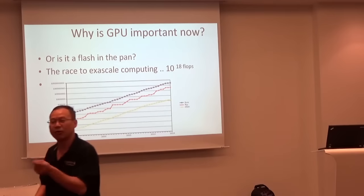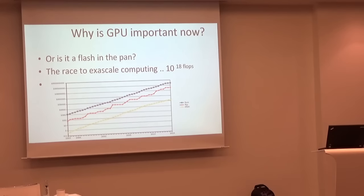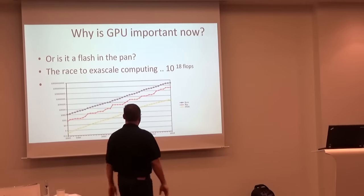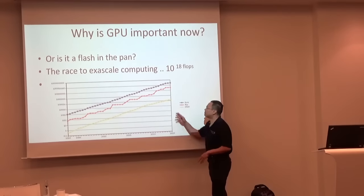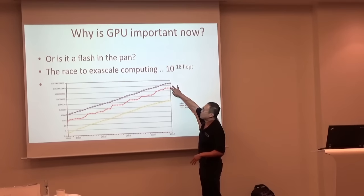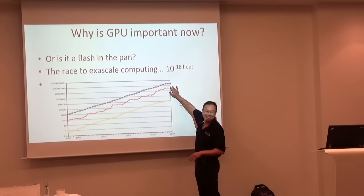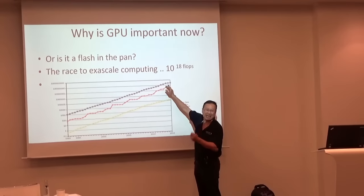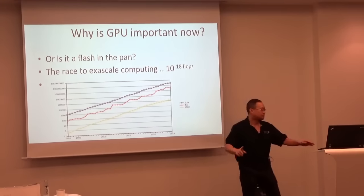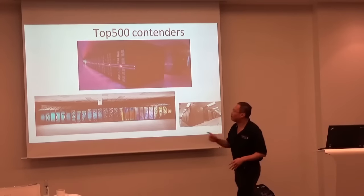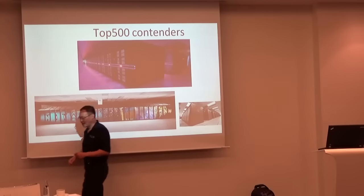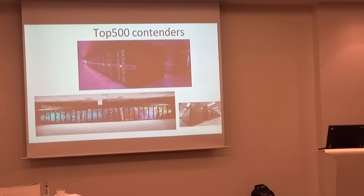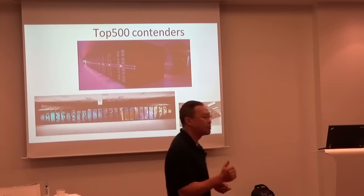Just think about what exascale means and where we are right now. The best supercomputers are almost, almost there. The aggregate of all 500 supercomputers doesn't enhance it by that much. The fastest computer in the world is in China — it's called the Tianhe-2. It's an Intel system with millions and millions of cores, using essentially an OpenMP and MPI model.